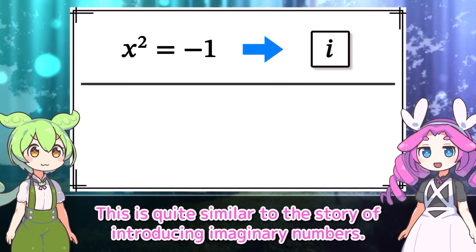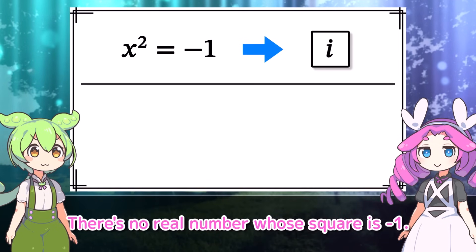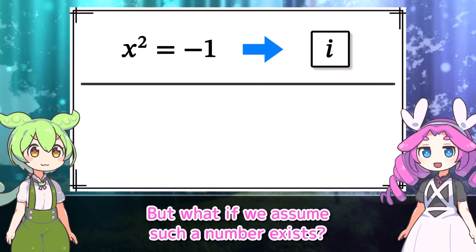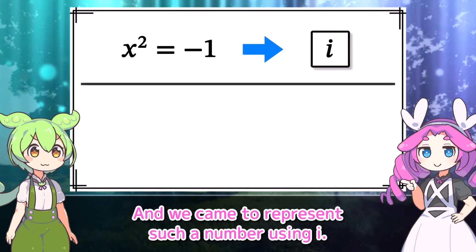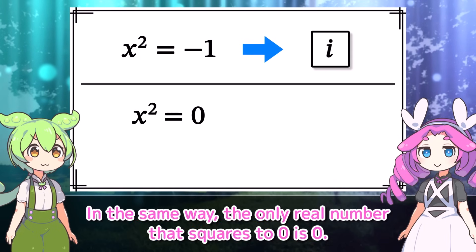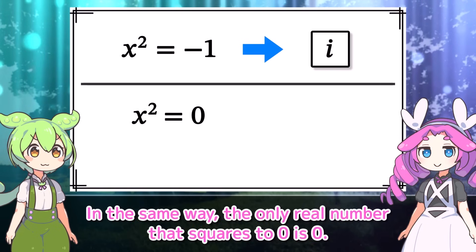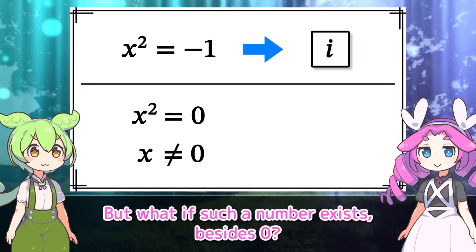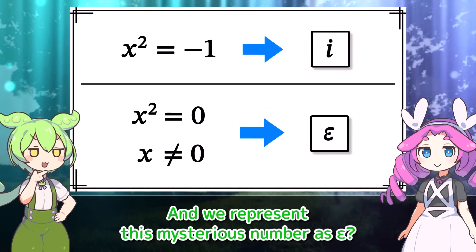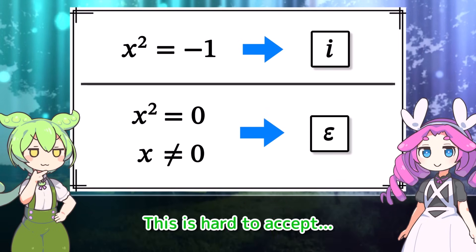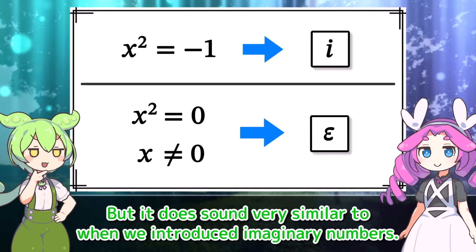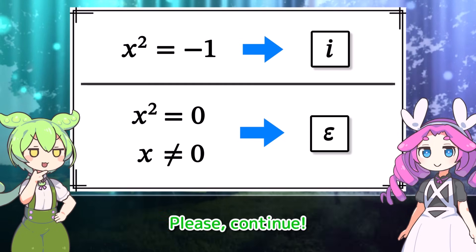This is quite similar to the story of introducing imaginary numbers. There's no real number whose square is negative 1, but what if we assume such a number exists? And we came to represent such a number using i. In the same way, the only real number that squares to 0 is 0. But what if such a number exists besides 0? We represent this mysterious number as epsilon. It does sound very similar to when we introduced imaginary numbers.